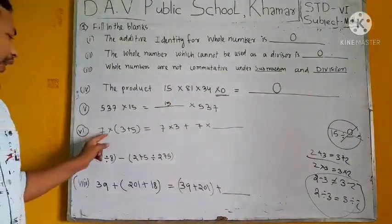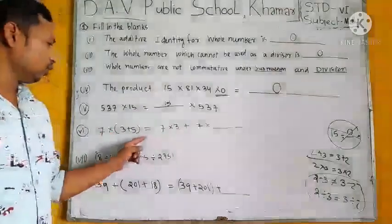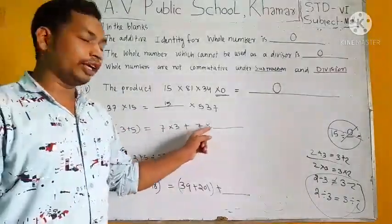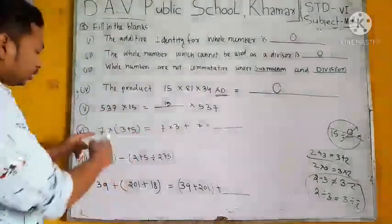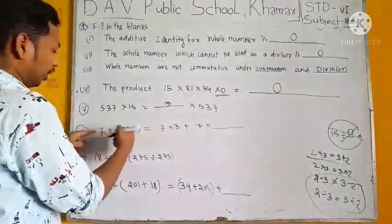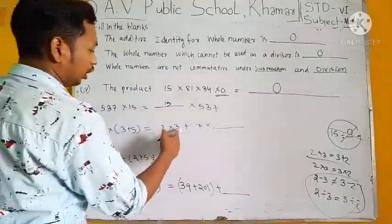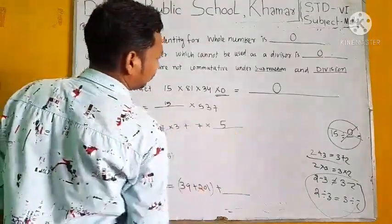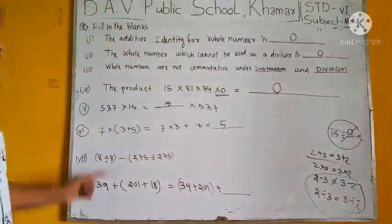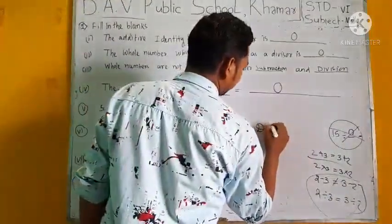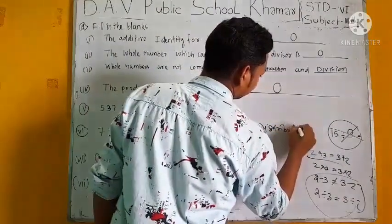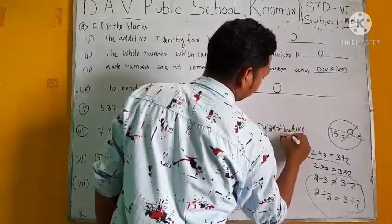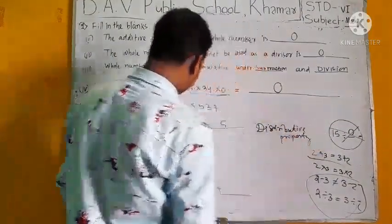Look at here. 7 into 3 plus 5 equal to 7 into 3 plus 7 into blank. This is our distributive property. 7 into 3 plus 5 equal to 7 into 3 plus 7 into 5. Which property here we use? Distributive property.